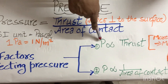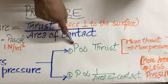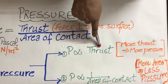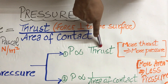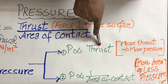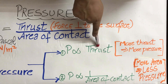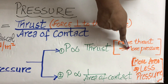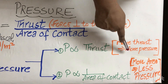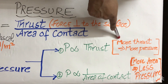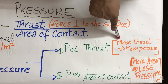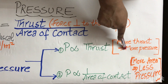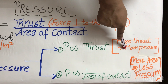The first factor affecting the pressure is that pressure is directly proportional to the force applied or the thrust. That means more thrust or more force applied means more pressure. If less force or less thrust is applied, less pressure is exerted.